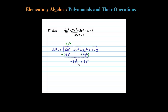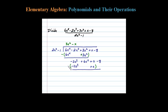Now let's bring down all the remaining terms, so we have 2x cubed plus 6x squared plus x minus 8. Let's do it again — what times 2x squared will give me negative 2x cubed? Let's try negative x. Multiplying negative x times 2x squared gives negative 2x cubed, which is what we want. Then negative x times negative 1 is plus x. Again, lining up the like terms.